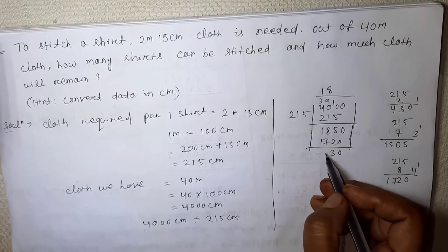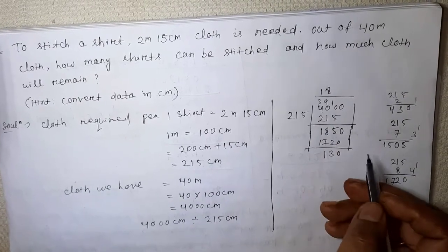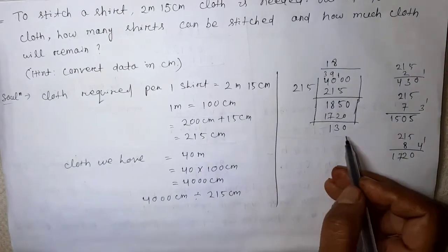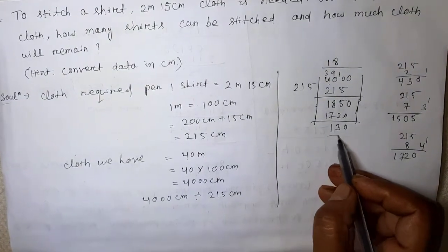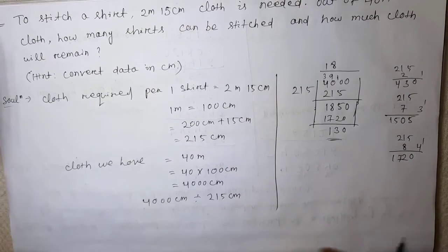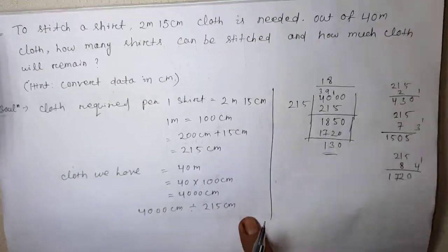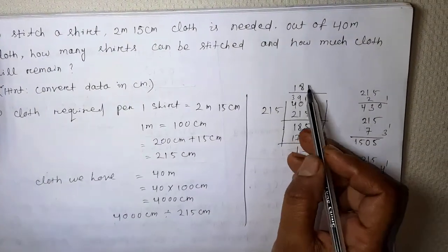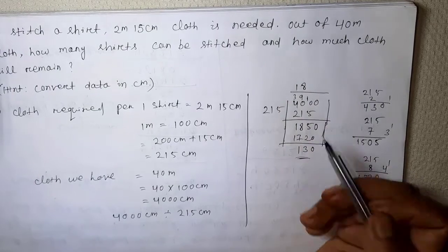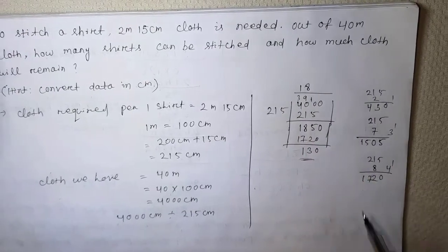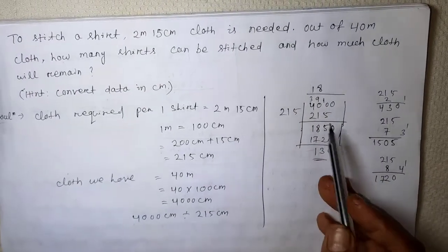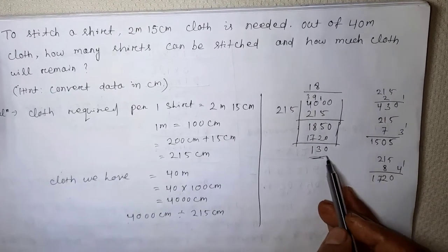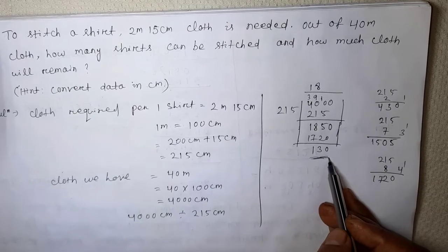The result is 18 shirts, with a remainder of 30. So the remainder — how much? 60, 70, 30 — remainder. So the remainder is 30 centimeter.